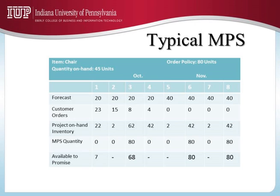For planning purposes: week one demand is 23 (the real customer order, since we're in that week now); week two demand is 20 (the forecast, not 15, because orders may still change); week three demand is 20. For weeks five through eight, the demand for planning purposes is 40, reflecting the higher November forecast.